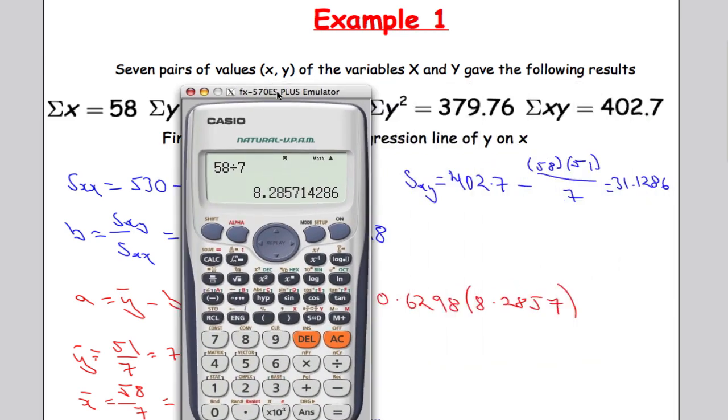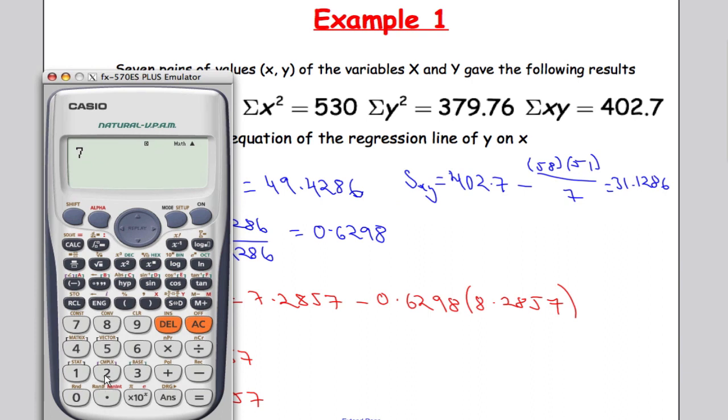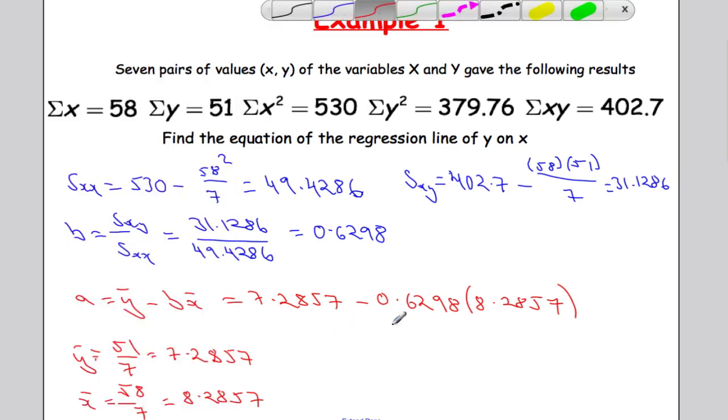So 7.2857 minus 0.6298 multiplied by 8.2857 that gives us 2.0099. So that's our value for a.